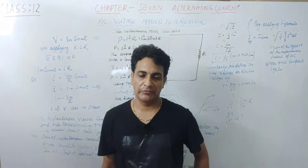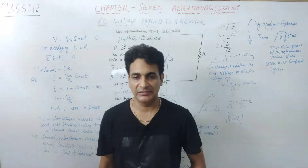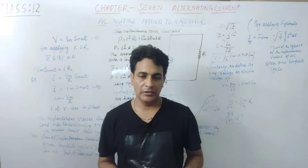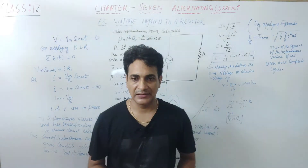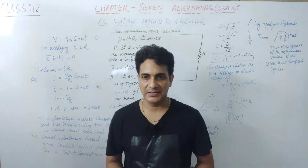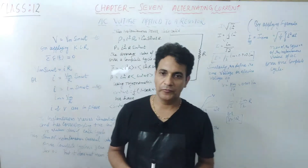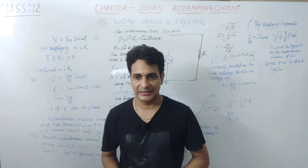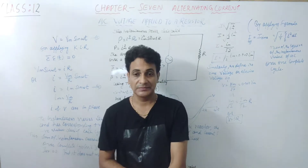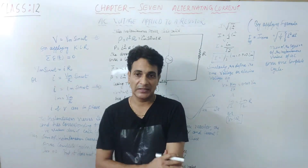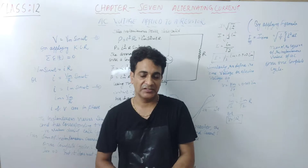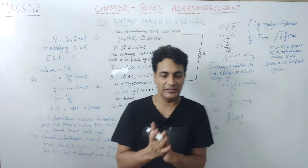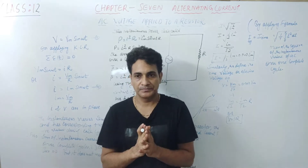Good evening students. Today we are going to start our seventh lesson, that is alternating current. You have already heard about DC current and AC current. So far we have considered direct current — DC sources and circuits with DC sources. These circuits do not change direction with time, meaning DC current does not change direction with time.